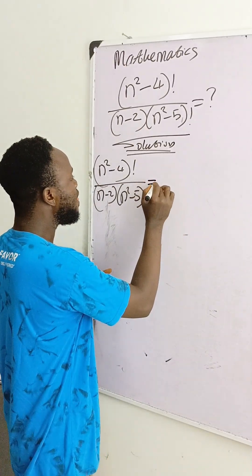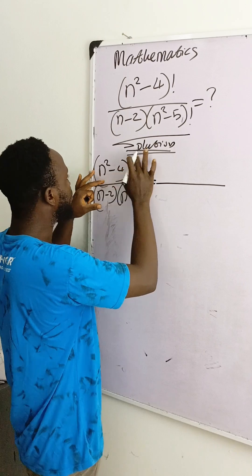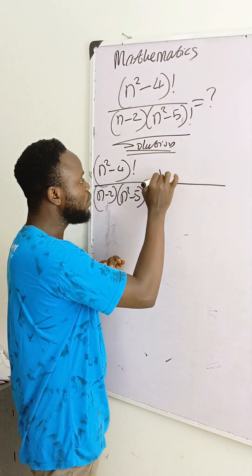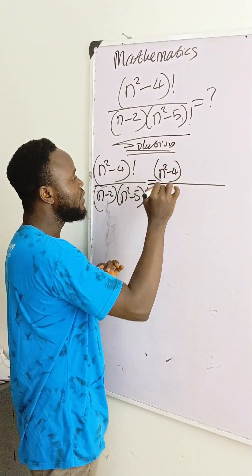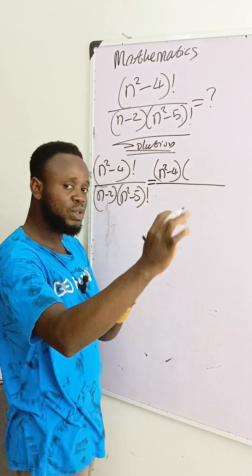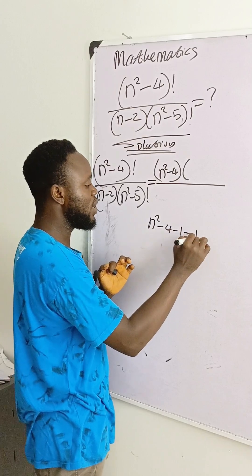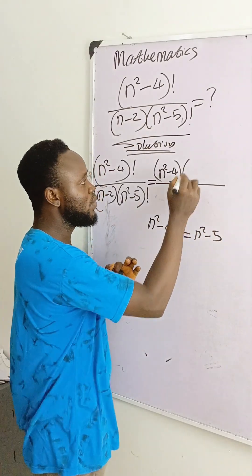This is equal to—if you want to solve this one, this is n squared minus 4 factorial. Then we have to keep the first one, n squared minus 4, then multiply by subtracting 1 from the first one. That is n squared minus 4 minus 1, which equals n squared minus 5.